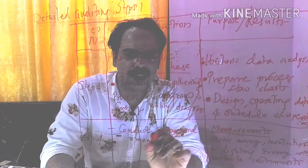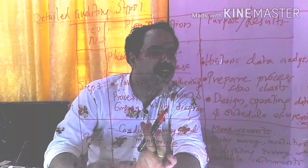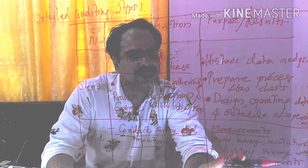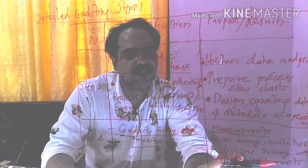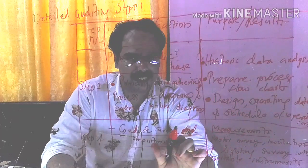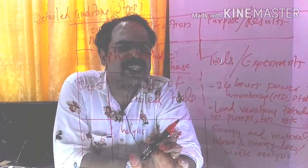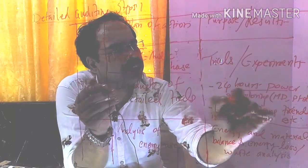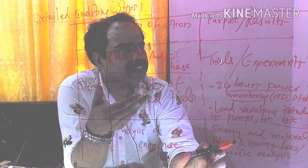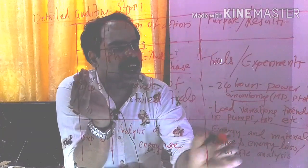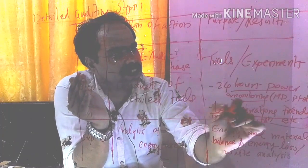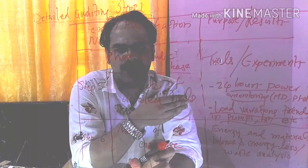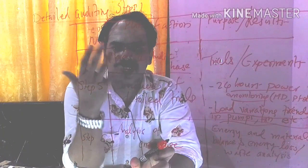In step four, we conduct a survey and monitor — using instruments to make measurements and get exact data values for analysis. In step five, detailed trials are conducted, including 24-hour process monitoring, such as measuring maximum demand and load factor. Load variations in pumps, fans, compressors, etc. are analyzed. These analyzing portions come under step five.